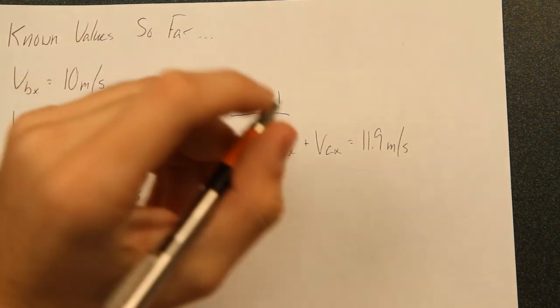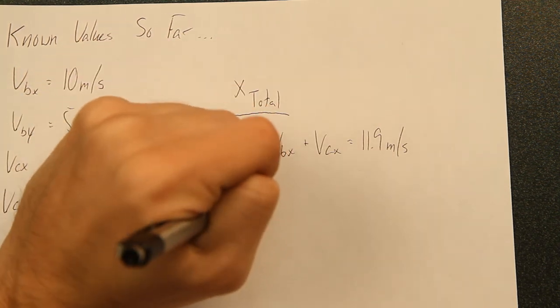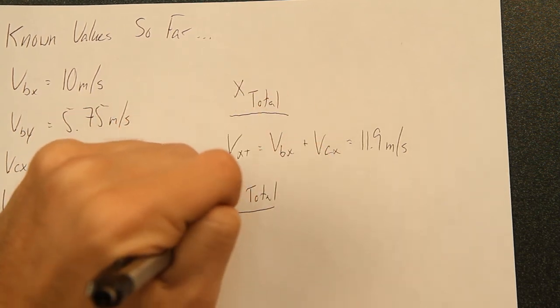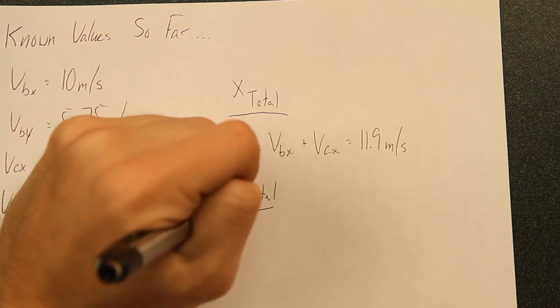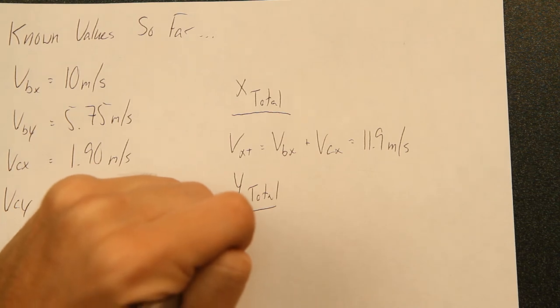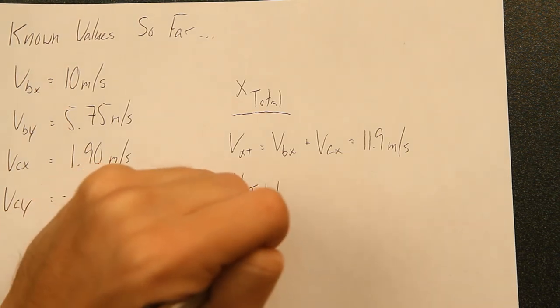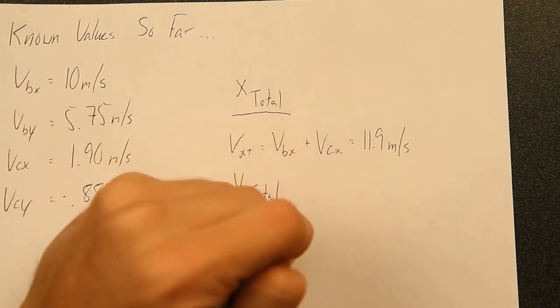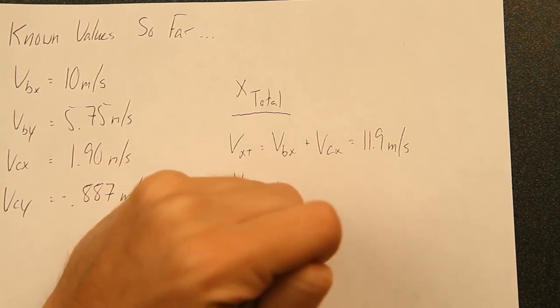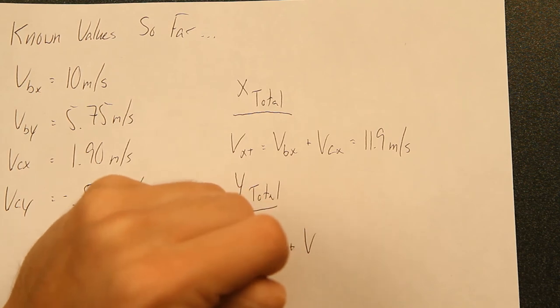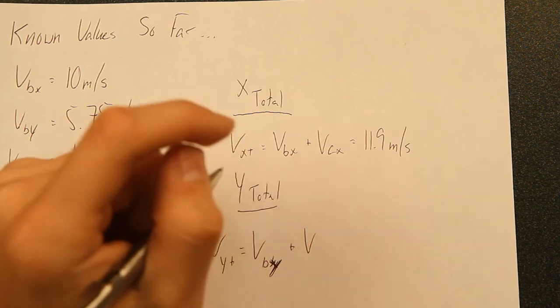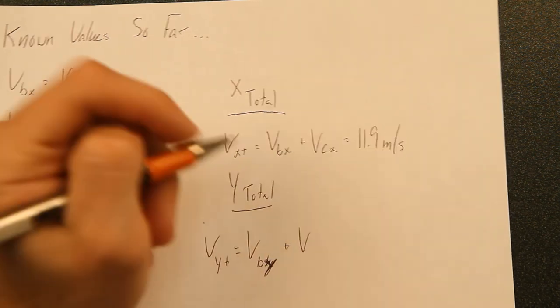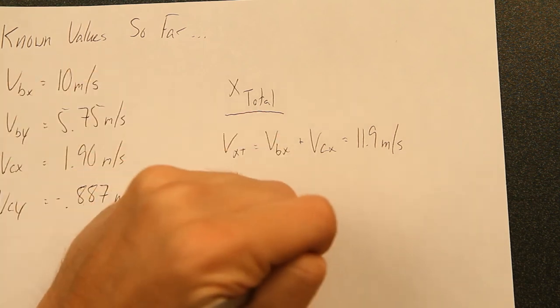Then we're going to have to find our y-total, or actually that's velocity. So our y-total is going to equal velocity b of y plus velocity c of y.